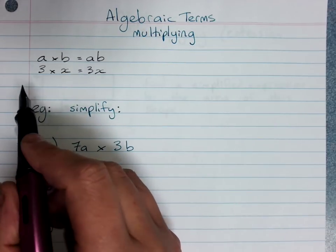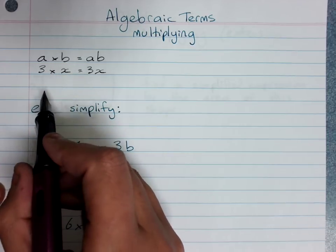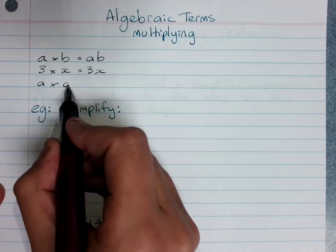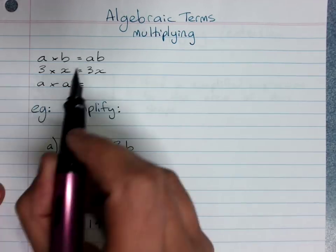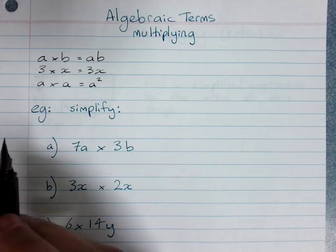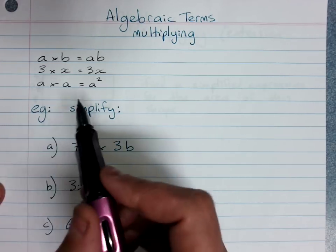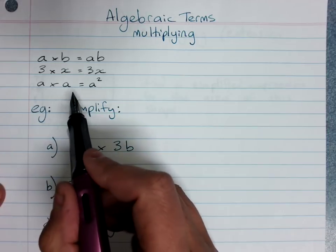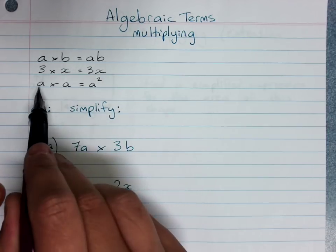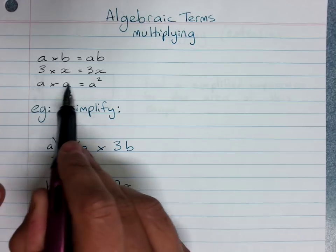When we multiply two identical letters such as a times a, this would be not 2a—be very careful—a times a is a squared. So when we have to multiply algebraic terms we remember these little rules: no times sign and remember anything times itself is it squared.